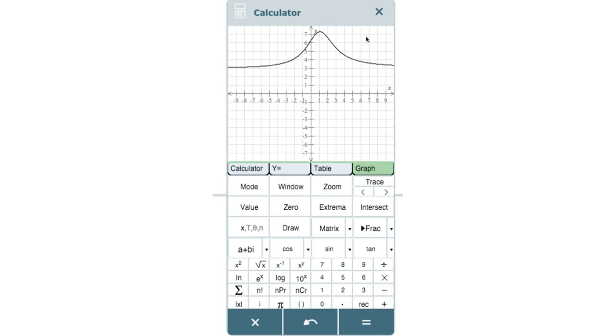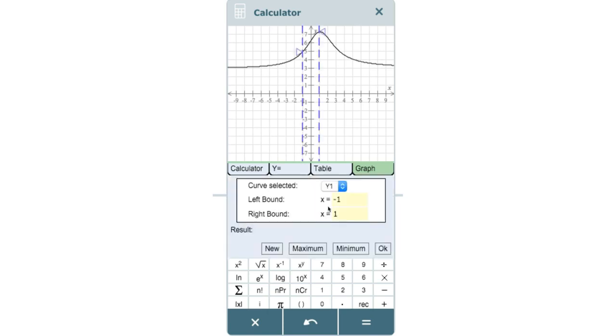So, how do I find the exact point of the maximum on the graph? To do this, we will click on extrema, and then x equals 0 for left bound, and x equals 3 for right bound. Then, click on maximum to find the point.